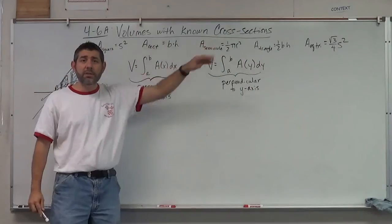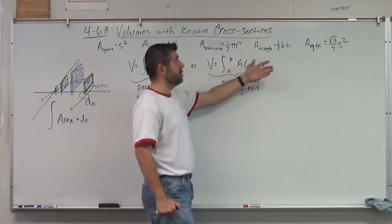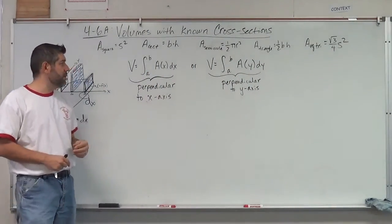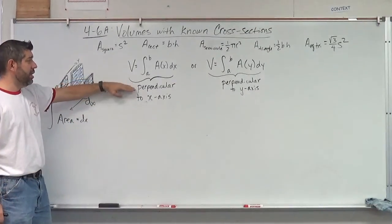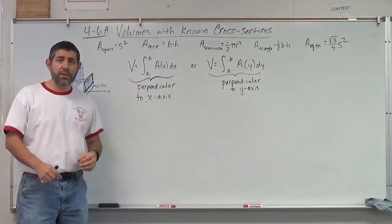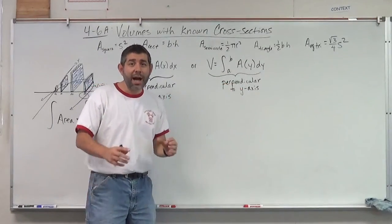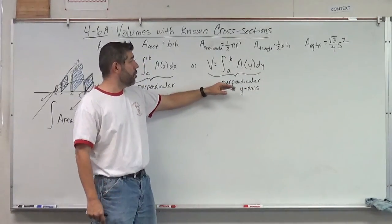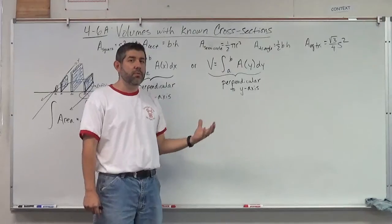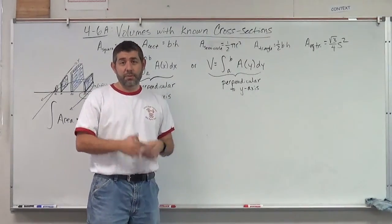Here are some common formulas for known cross-sections: squares, rectangles, semi-circles, triangles, and equilateral triangles. Those come up most often in AP Calculus. If we're looking at cross-sections perpendicular to the x-axis, our area formula is going to be in terms of x. If perpendicular to the y-axis, the area function is in terms of y — so A sub y times dy. Let me get back to you and we'll do a few examples.